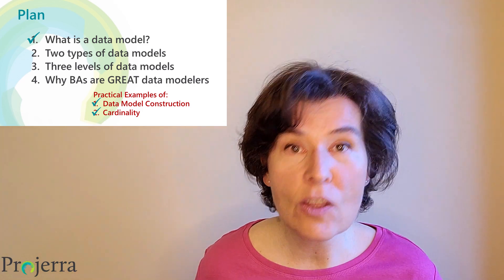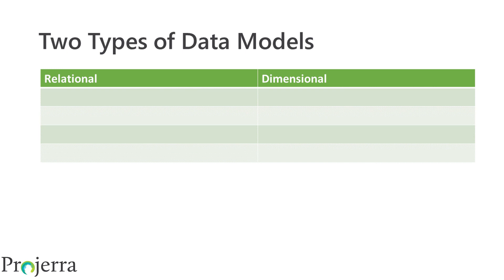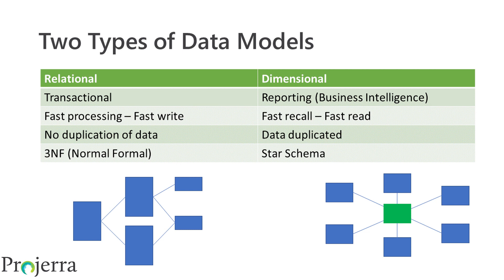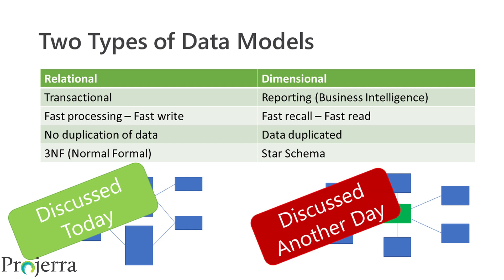Now let's turn our attention to the two types of data models. The two most common types are relational and dimensional. A relational model is used by transactional systems — it is designed to support fast processing and fast write, with no or minimum data duplication. Information that can be derived or calculated will be done so when required. It is in a format commonly referred to as third normal form. A dimensional model is used by reporting or business intelligence systems, designed for fast recall, so data must be repeated or duplicated to support fast read. Calculations are minimized, and it is in a format referred to as a star schema. The relational model is the type we demonstrated today; the star schema will be demonstrated another day.